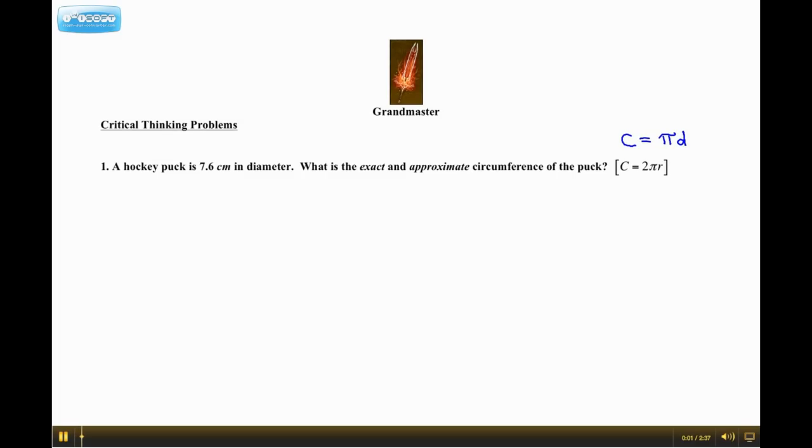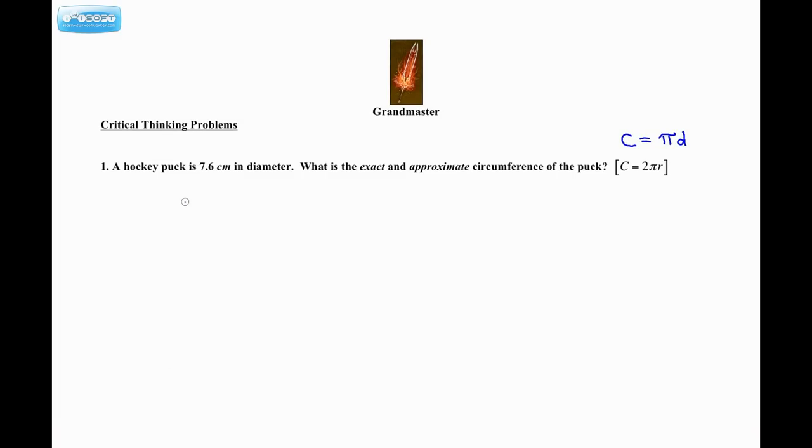All right, so how do we find the exact circumference? Well, first of all, exact just means no rounding, no decimal approximations, no nothing. Well, you're going to run into trouble when you're working with pi because pi, if written as a decimal, it's what we call an irrational number, meaning it goes on forever and it doesn't repeat.